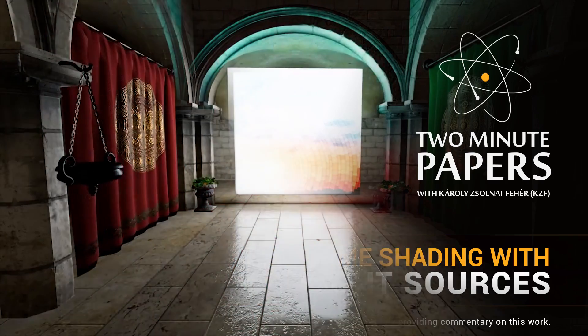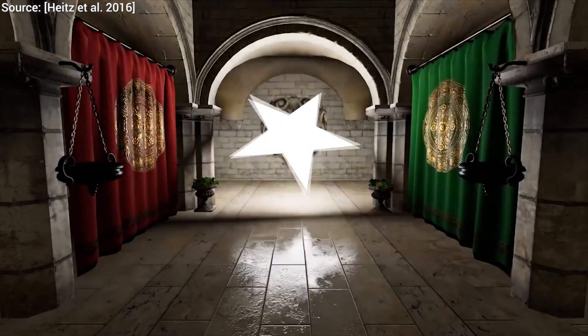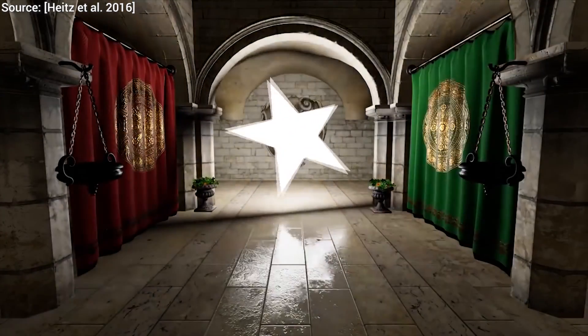In computer graphics, we use the term shading to describe the process of calculating the appearance of a material. This gives the heart and soul of most graphical systems that visualize something on our screen.